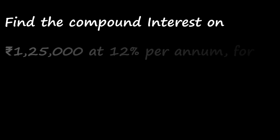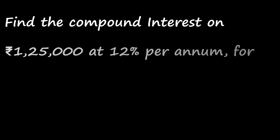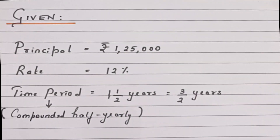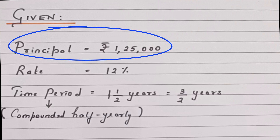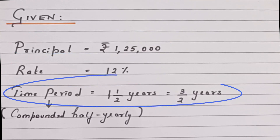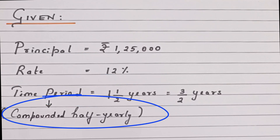Let's get started. Find the compound interest on rupees 1,25,000 at 12% per annum for one and a half years, compounded half yearly. In this particular sum, principal is given to be 1,25,000, rate is equal to 12%, and time period is equal to one and a half years. Interest is compounded half yearly, meaning twice in a year.